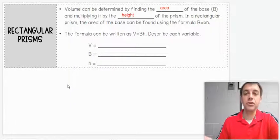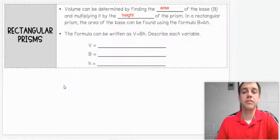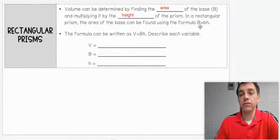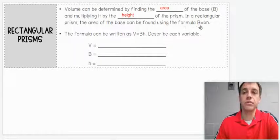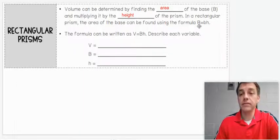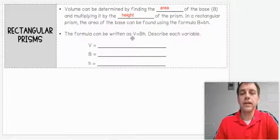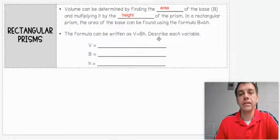But with volume, that's exactly what we're looking for. In a rectangular prism, the area of the base can be found by using the formula big B, base area equals base times height, or you could say length times width. So the formula can be written as volume equals base area times height.